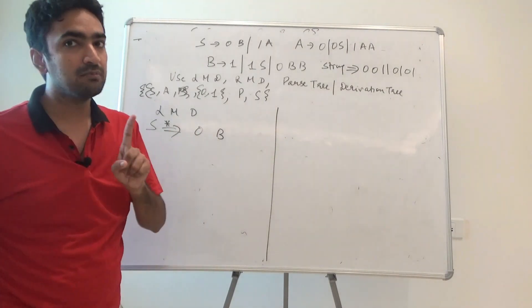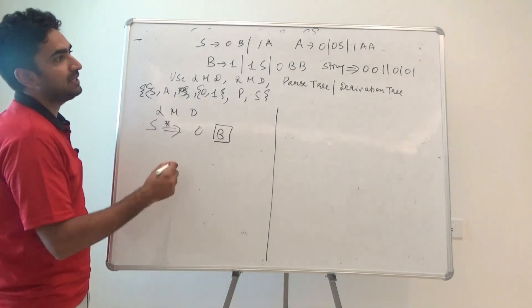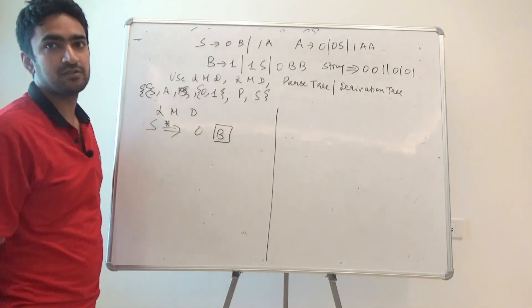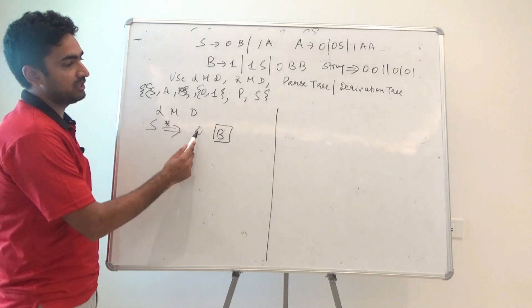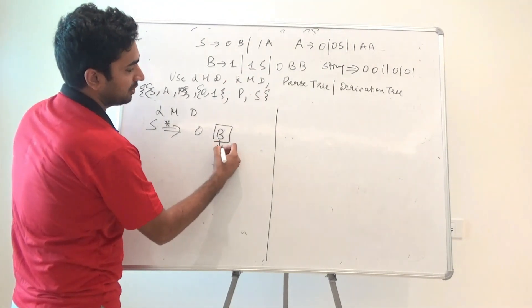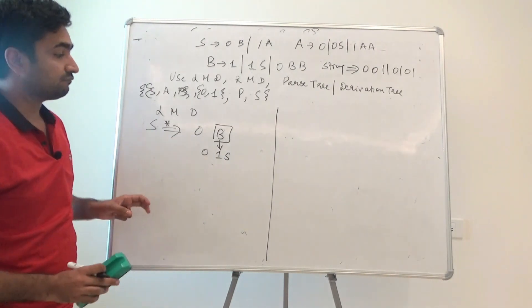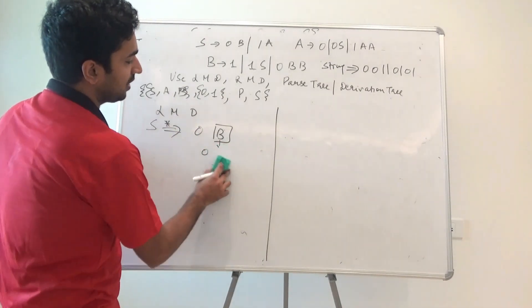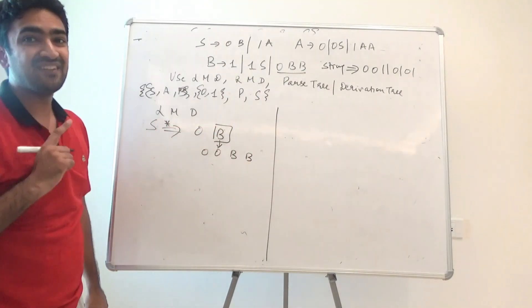Now I have to pick a non-terminal from 0B. The only non-terminal is B, and B generates 11S0BB. I could write B → 1, giving 0 1, but the string doesn't start with 0 1. I could write B → 1S, but that would give 0 1 which I don't want. So the only remaining option is B → 0BB, giving us 0 0 B B.